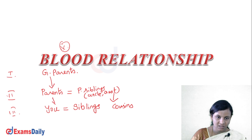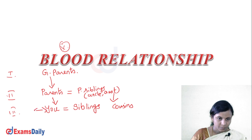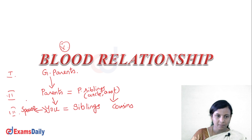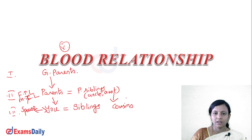So first generation, second generation, third generation. Next, this is before marriage — we have direct relations. After marriage, we have the spouse. Wife or husband — the general term is spouse — belongs to your generation. If you look at the second generation, your spouse's parents are your father-in-law and mother-in-law, who belong to the second generation.